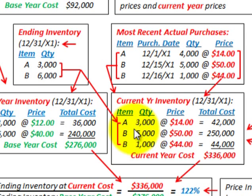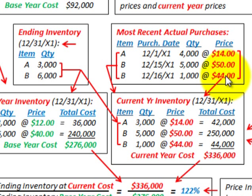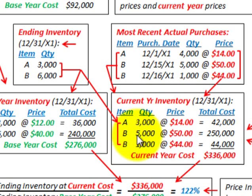For Item B, we have 6,000 units in ending inventory. Looking at the most recent prices, we purchased 5,000 units at $50 per unit and 1,000 units at $44 per unit — totaling 6,000 units. We use these most recent prices: 5,000 units times $50 equals $250,000.